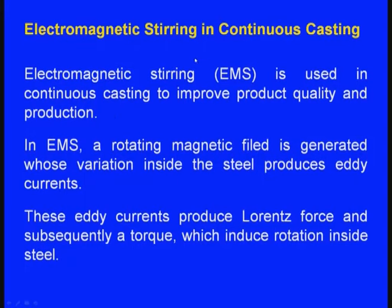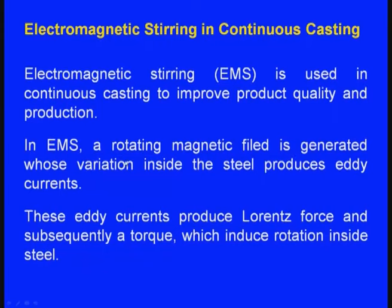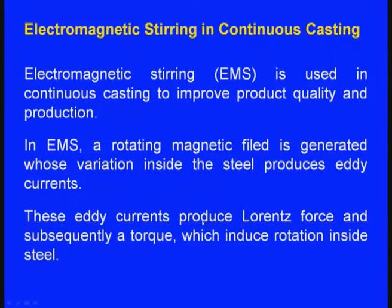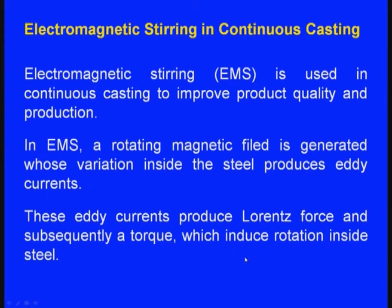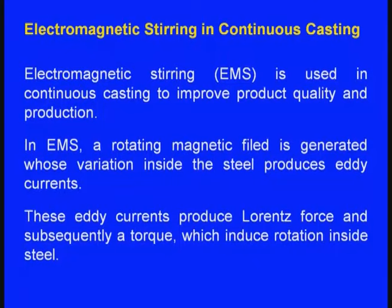Let us see the advances in continuous casting process. The most important advance is electromagnetic stirring, also known as EMS. EMS is used in continuous casting to improve product quality and production. In EMS, a rotating magnetic field is generated, whose variation inside steel produces eddy currents. These eddy currents produce Lorentz force and subsequently a torque which induces rotation inside the molten metal or steel. Because of this rotation inside the molten metal, grain improvement is caused.